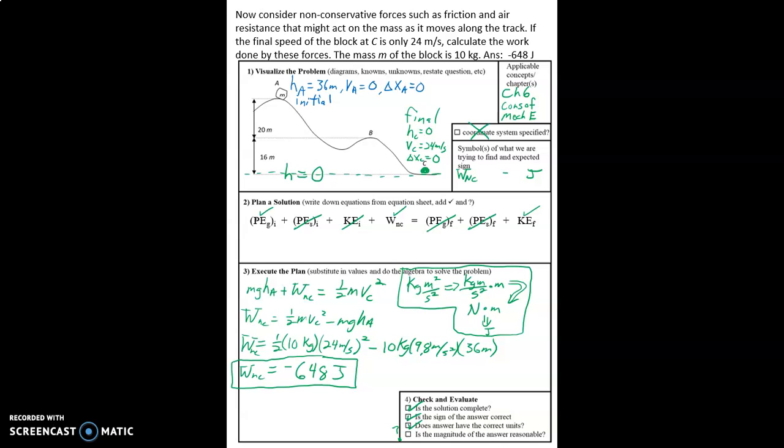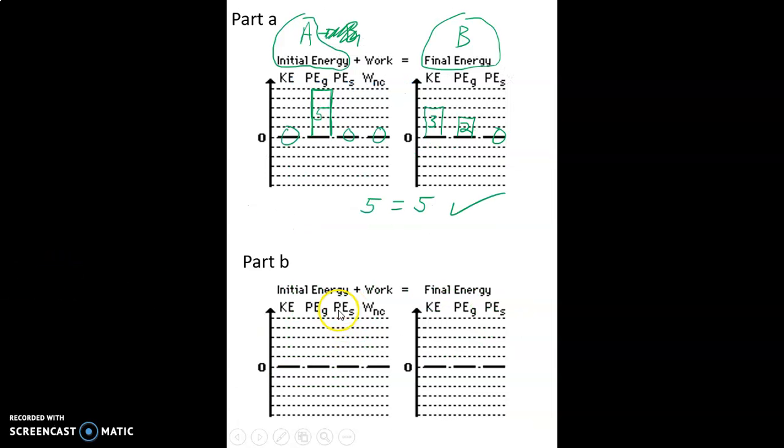So what we did not do is look at the energy bar chart. So we'll do that now. You can see the energy bar chart from part A where there was no work done by non-conservative forces, but now we're going to fill it in for the case where we did have the non-conservative forces.